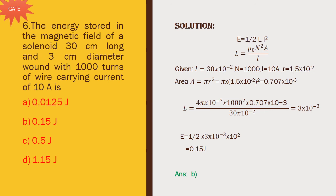Next problem: the energy stored in the magnetic field of a solenoid 30 cm long and 3 cm diameter wound with 1000 turns of wire carrying a current of 10 ampere is? Using E = 1/2 L I squared and the solenoid inductance formula L = mu_0 N squared A divided by L, with diameter given we calculate area, then substitute all values to get L = 3 × 10^-3 Henry. Then E = 1/2 × 3 × 10^-3 × 10 squared = 0.15 joules. Option B is the right answer.